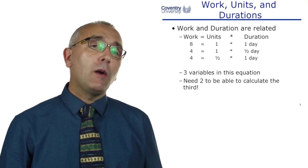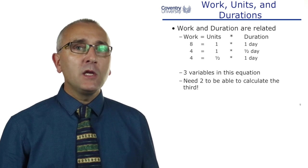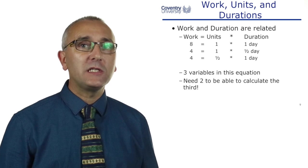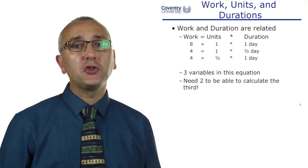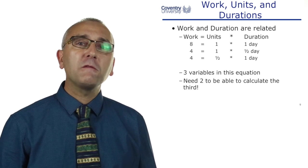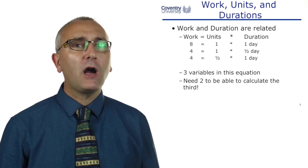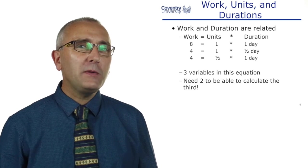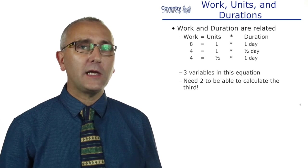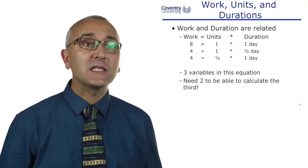So the work content is ten hours, the duration three weeks. Work and duration are different things but they are related. For instance, if we've got eight hours of work and one person is doing it, then typically the duration should be one day. If we've got four hours of work, do we mean that one person is working for half a day or do we mean that half a person is working for the whole day? So that person could be working 50% on that task.